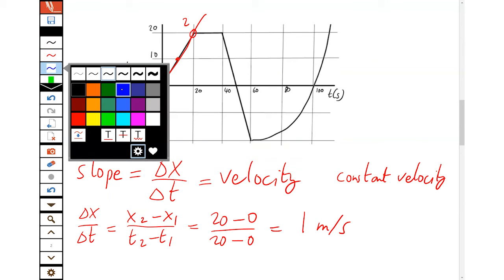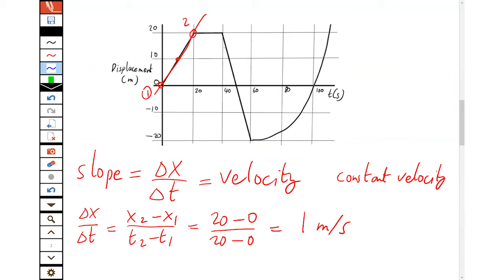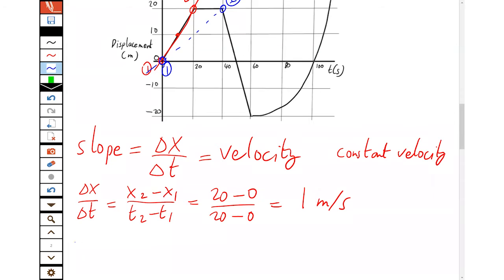But we can take it between any two points. For example, if we take it between here and here. So that's our second point. That's our first point. We'll find the average velocity, even though it's stopped for a while. So in that case, the new position minus the old. The new time minus the old. So that's 20 meters minus zero over 40 seconds minus zero. So the average velocity is now much slower.